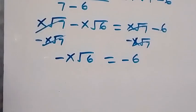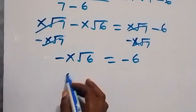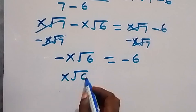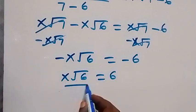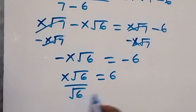Also from here, multiply through by minus, minus cancels out, we have x root 6 equals to 6, and divide through by root 6.